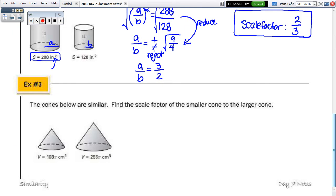And number 3, the cones below are similar. Find the scale factor of the smaller cone to the larger. So, I'm going to use the radii again of A to B. So, my similarity ratio is A to B. And if we went from the smaller to the larger, our scale factor needs to be greater than 1. And we know that when we take that similarity ratio and cube it, we get the ratio of the volume. So, that would be 108 pi to 256 pi.